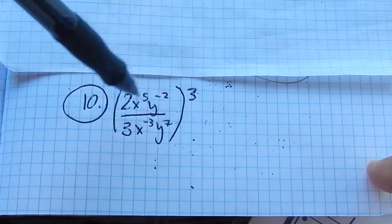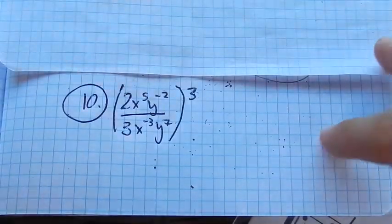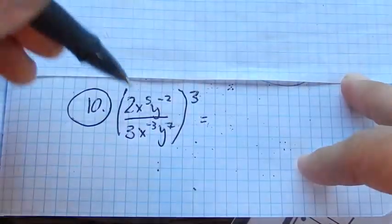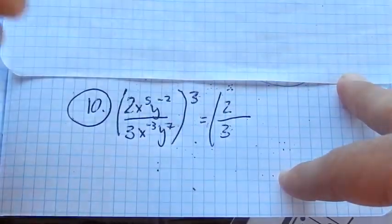What I'm going to do is simplify inside first, and then cube everything. You can cube everything first if you want, it doesn't matter. Two-thirds, I'm not going to be able to resolve that, so I'm going to leave it as two-thirds.